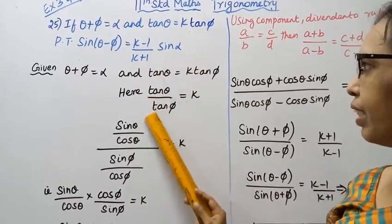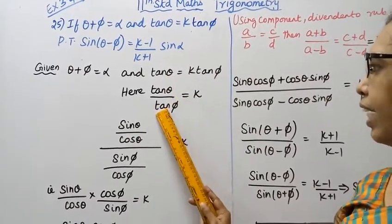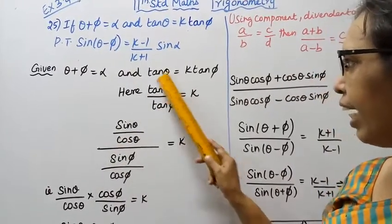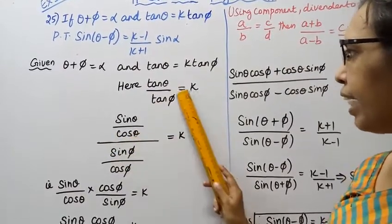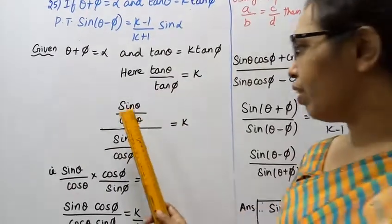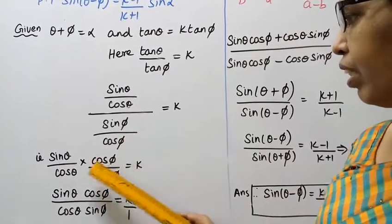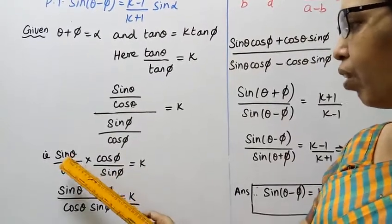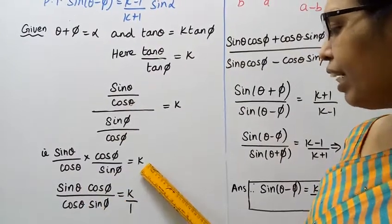We write tan theta by tan pi equal to k. Expanding: tan theta is sin theta by cos theta, so sin theta by cos theta divided by sin pi by cos pi equal to k. This gives sin theta cos pi divided by cos theta sin pi equal to k by 1.